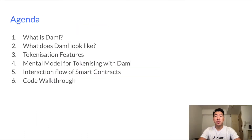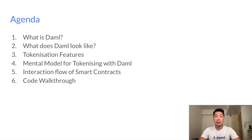We will be going through six points: what is DAML and what does it look like; key tokenization features such as being able to split, mint, merge, and transfer ownership; the mental models you would need when coding with DAML; the interaction flow of the smart contracts; and finally a code walkthrough on how to tokenize assets using DAML.